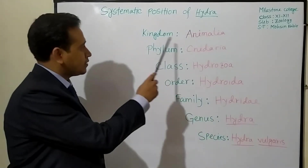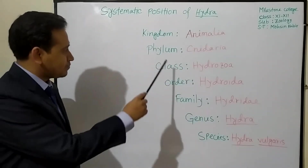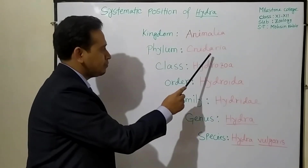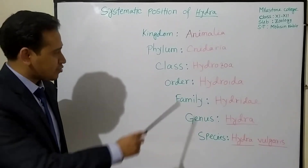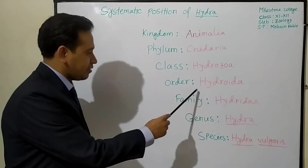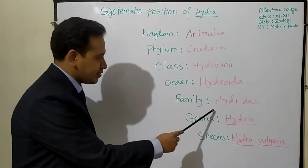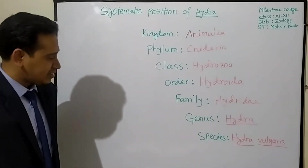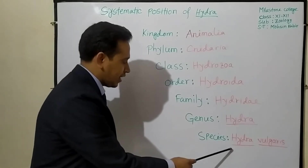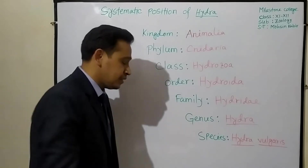Now let's know the systematic position of Hydra. The kingdom of Hydra is Animalia. Phylum: Cnidaria — it is a diploblastic animal, so it belongs to phylum Cnidaria. The class of Hydra is Hydrozoa, and the order is Hydroida. Family is Hydridae, the genus is Hydra, and the species is Hydra, found in Bangladesh.